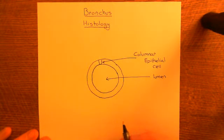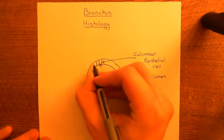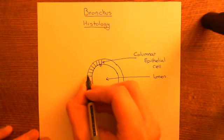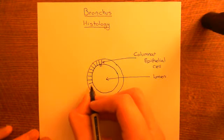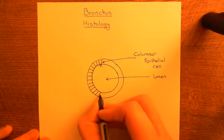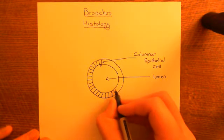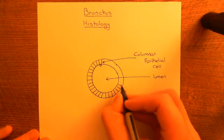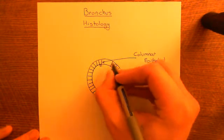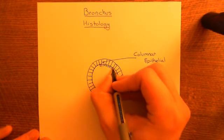These columnar epithelial cells are all ciliated, so they have little cilia coming off them. What it means for them to be columnar is that they're a rectangular shape when viewed in cross-section — they're quite tall. They're very different from the epithelial cells in the skin or blood vessels, which are very flat and pressed against the basement membrane.